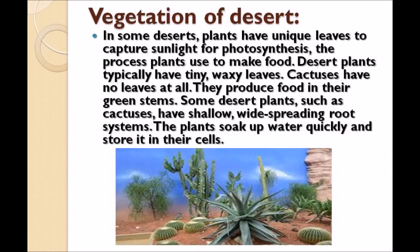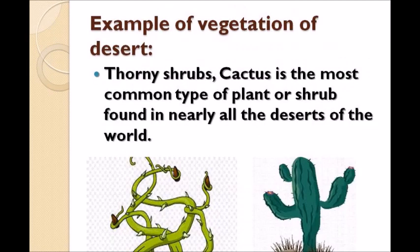In some deserts, plants have unique leaves to capture sunlight for photosynthesis. Desert plants typically have tiny waxy leaves. Cactuses have no leaves at all — they produce food in their green stems. Some desert plants like cactuses have shallow, wide-spreading root systems that soak up water quickly and store it in their cells. Thorny shrubs and cacti are the most common types of plants, and horsetail herbs are found in nearly all the deserts of the world.